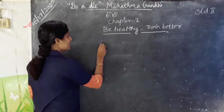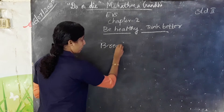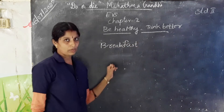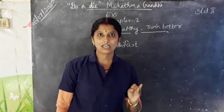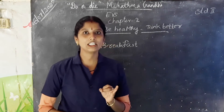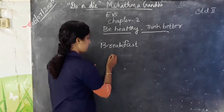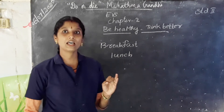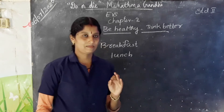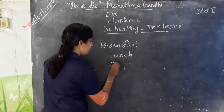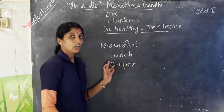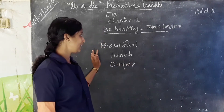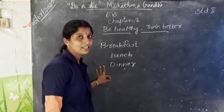Breakfast is the first meal of the day. The second meal, that is midday, is called lunch. And the third meal of the day is dinner. So generally, we eat three times in a day: morning, noon and night — breakfast, lunch and dinner.